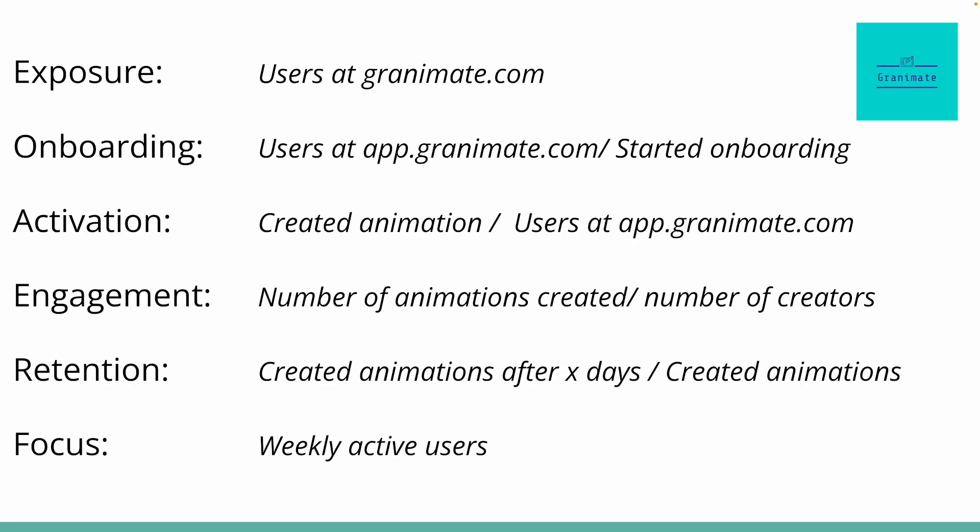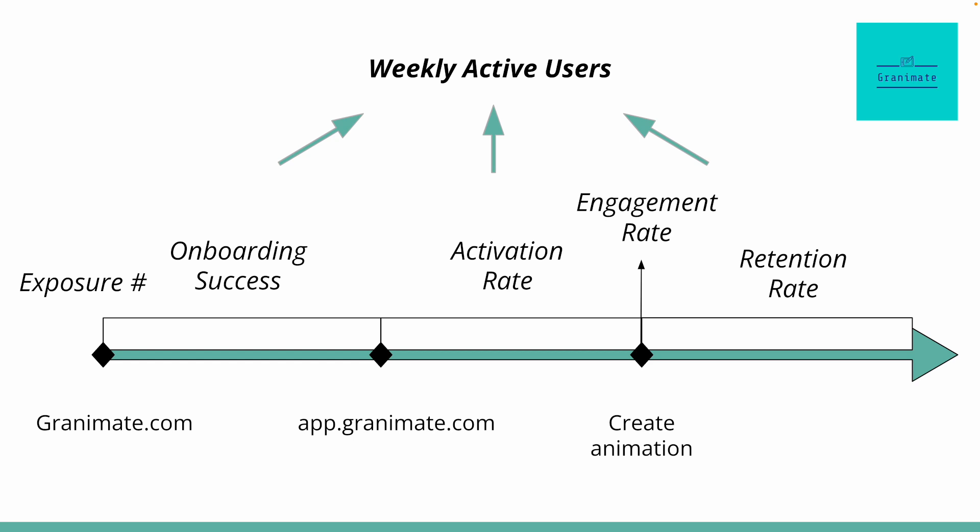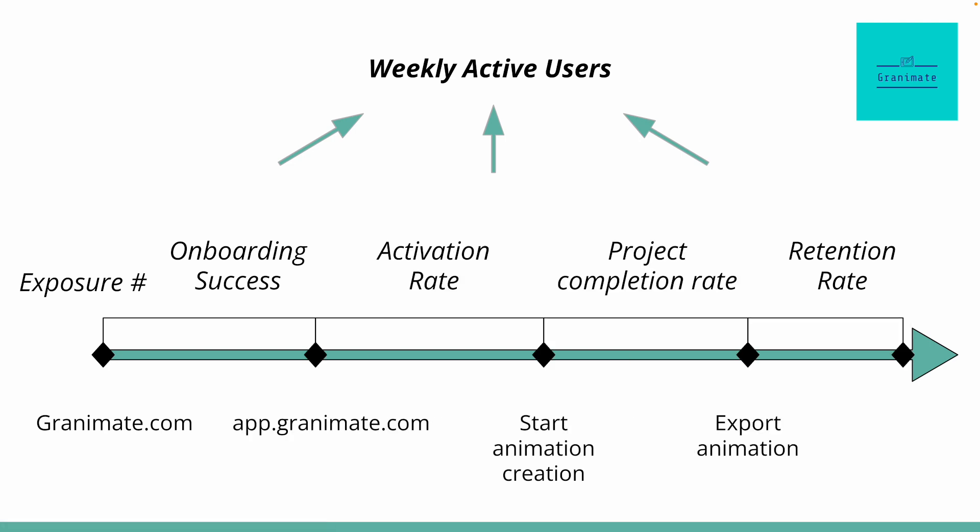Now let's say you want to get more granular. Creating an animation means exporting a video file, but what about the moment a user starts creating one? That's also a key moment. So just draw it on your user journey map and treat it like any other key point. Measure your conversion rate from onboarding completion to starting a project — that can be your activation rate. Then have a second metric that looks at your conversion rate from starting a project to exporting the final animation file. You can even give it its own engagement rate measuring the number of projects started per project starter. Essentially, you can take that same activation, engagement, and retention approach and apply it to any key point in the user journey.